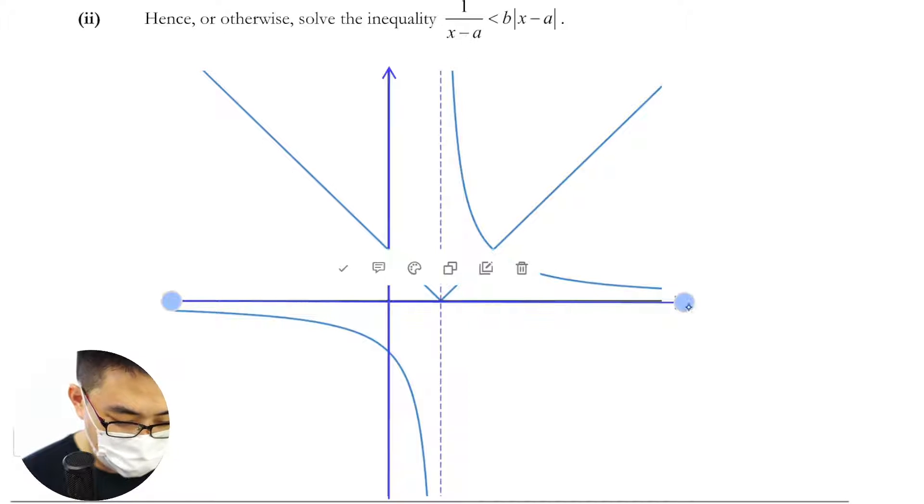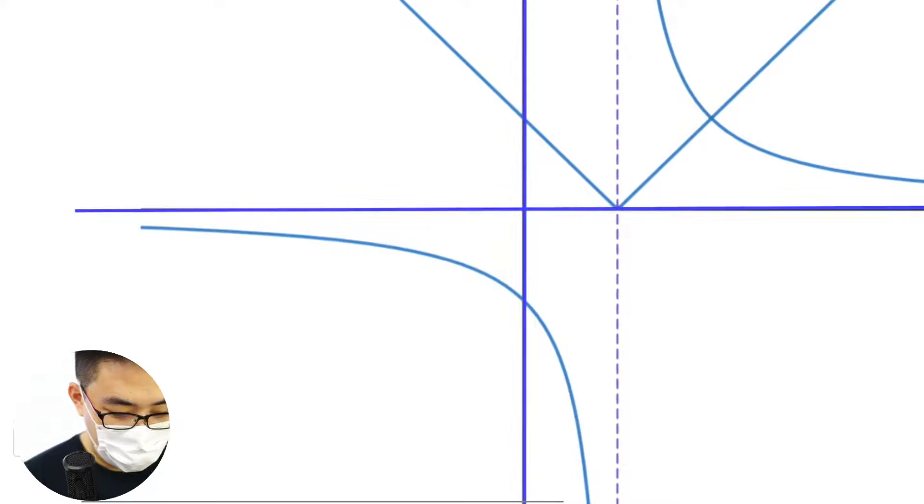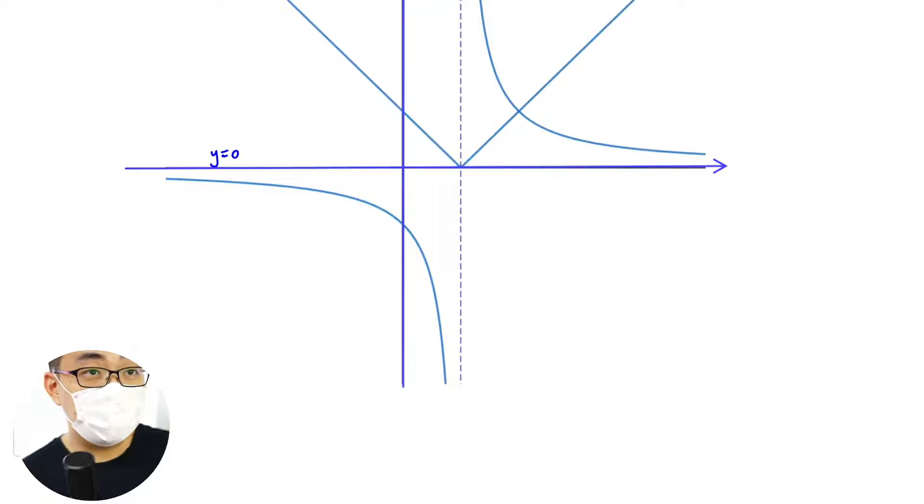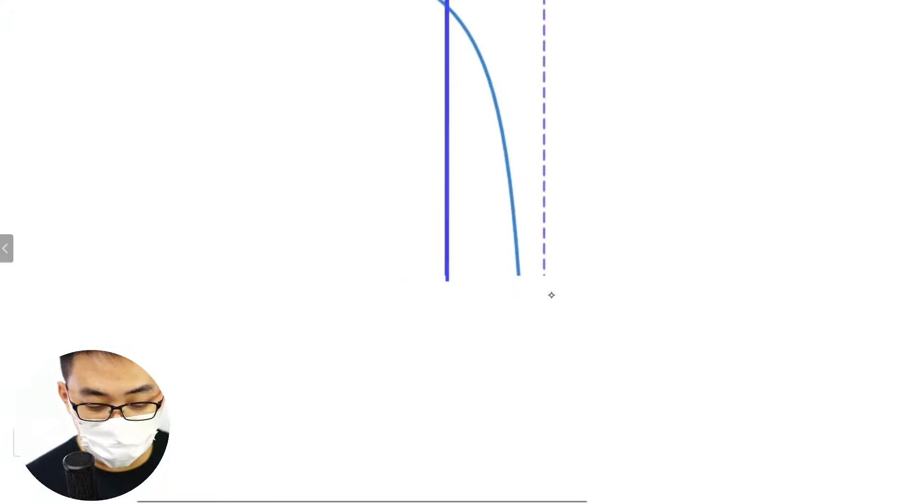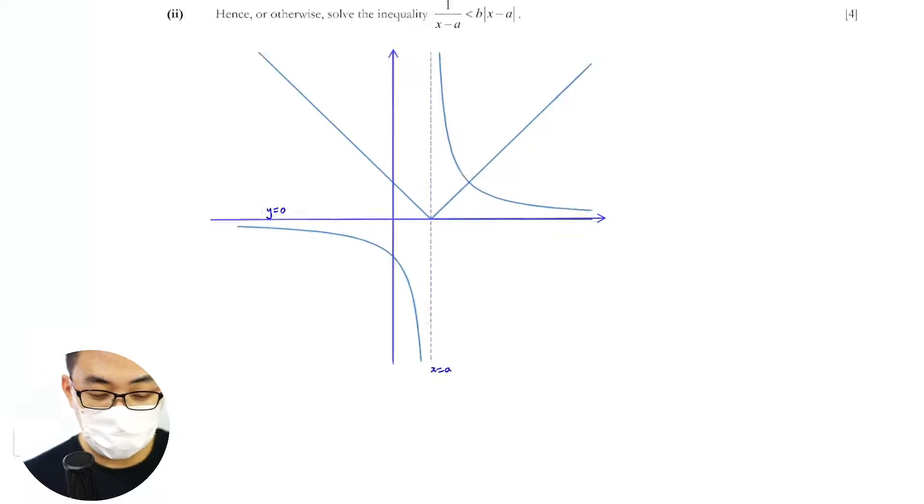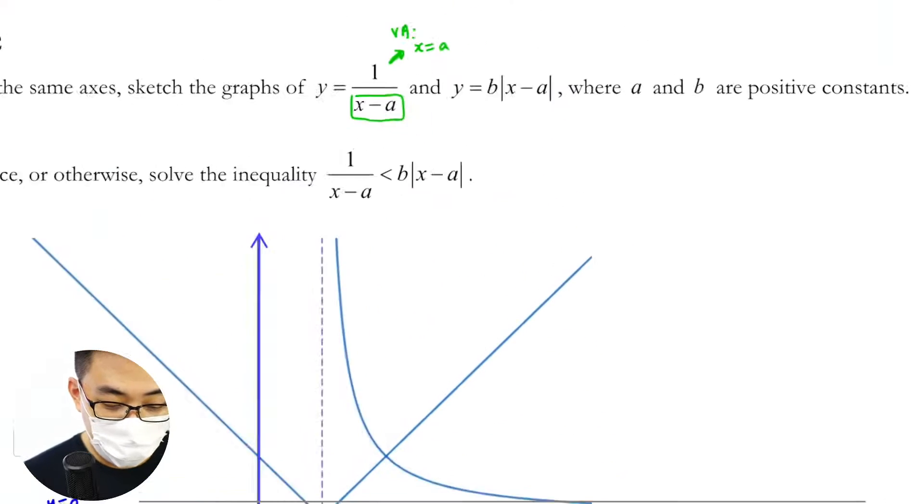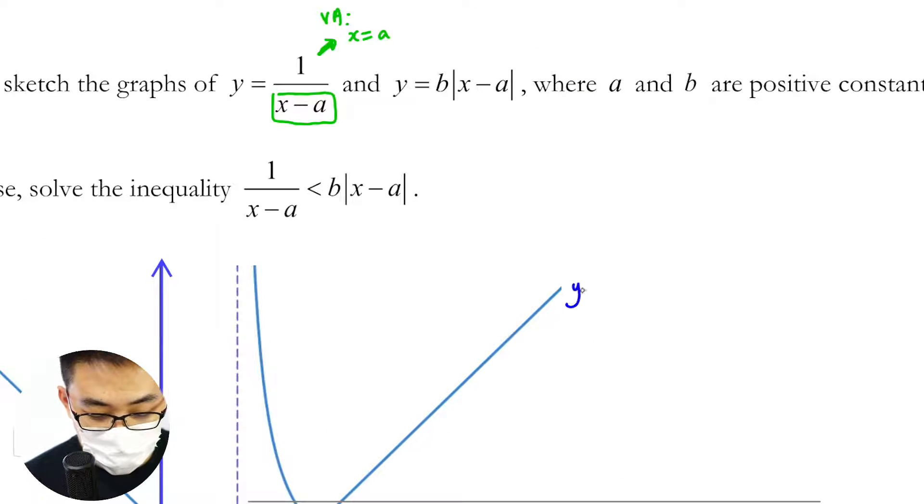Label all the asymptotes out. This is y equals zero. We don't need the equation of the asymptotes. If you don't label it you still get full marks because they just want you to plot it in the same graph, they never say you need to label everything.